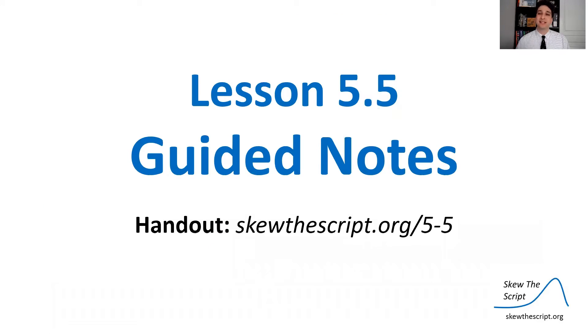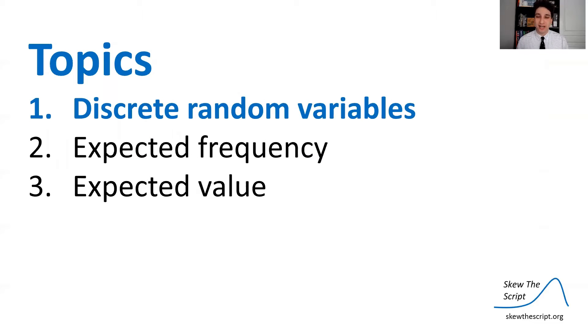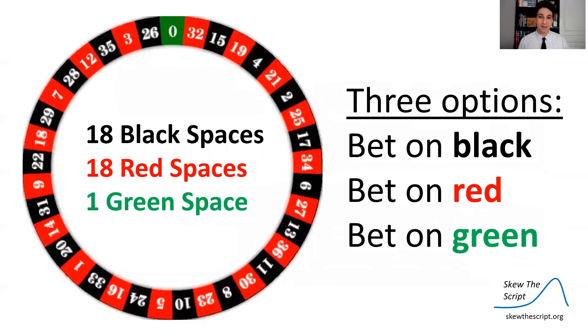This is lesson 5.5. If you follow along using our handout, you can go to the URL to print it up and follow along. First, we're going to talk about discrete random variables, and we're going to build up to talking about the casino games themselves.